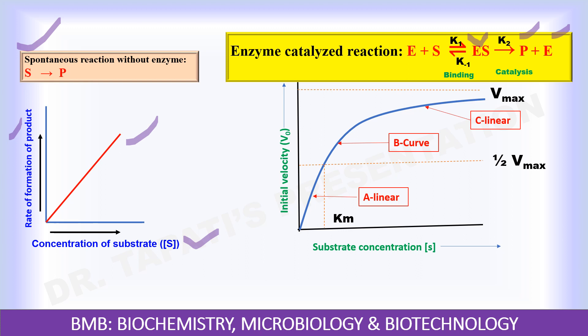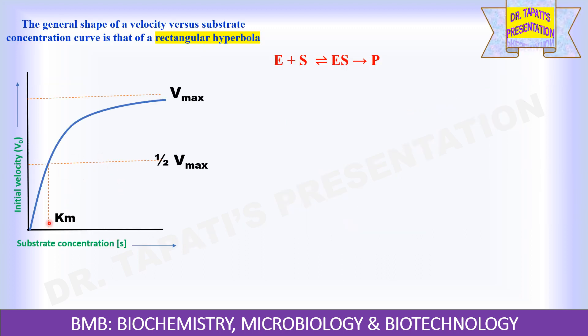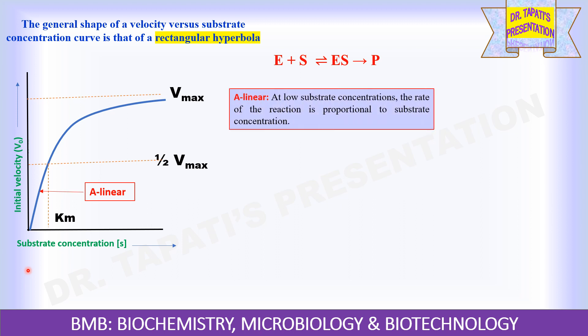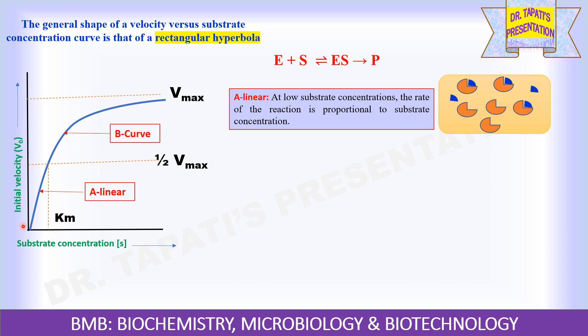This relationship between initial velocity and substrate concentration is observed when enzyme concentration, time, pH, temperature, and other factors remain constant. Three distinct phases are observed in the graph. The first phase is linear because at low substrate concentrations, the rate of reaction is proportional to substrate concentration. Increase in substrate concentration causes more and more enzyme molecules to bind with substrate molecules, and hence velocity also increases. The rate of reaction is said to be first order with respect to substrate. The second phase is curved.